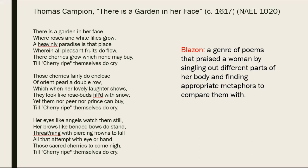There is a garden in her face where roses and white lilies grow, a heavenly paradise that is placed wherein all pleasant fruits do flow. There cherries grow which none may buy till cherry ripe themselves do cry. Those cherries fairly do enclose of orient pearl a double row, which, when her lovely laughter shows, they look like rosebuds filled with snow. Yet them nor peer nor prince can buy till cherry ripe themselves do cry.